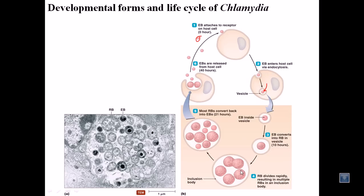When all these materials are produced, the elementary body grows and matures into large granular structures called reticulate bodies. The reticulate bodies produce chemicals that cause the host cell to die, harvesting energy and nutrition from the cell. After several more hours of development, the reticulate bodies start to reconvert back into elementary bodies — smaller structures — and the whole cell finally releases them into the environment.